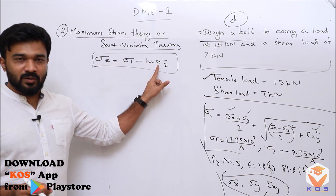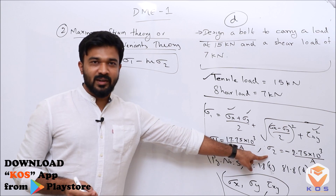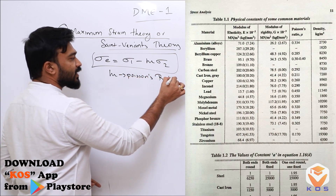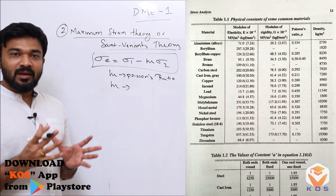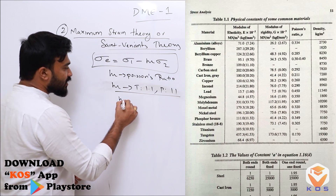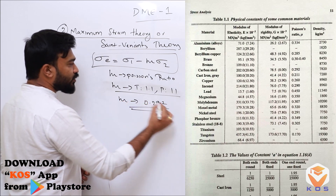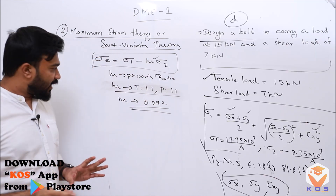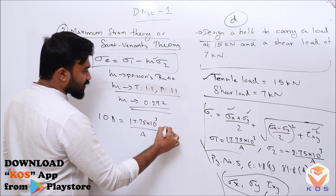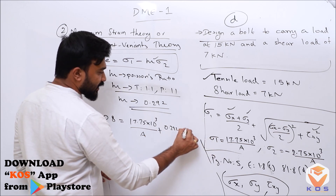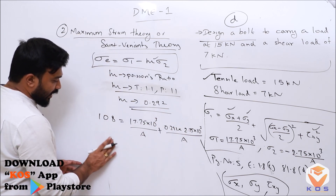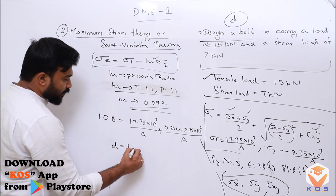The second theory is Saint-Venant Theory: sigma_e equals sigma_1 minus mu × sigma_2. We already have sigma_1 and sigma_2. Poisson's ratio mu is the lateral strain divided by longitudinal strain, from table 1.1, page 11. We get mu = 0.292. Substituting: 108 = 17.75 × 10³/A minus 0.292 × (−2.75 × 10³/A). The diameter works out to d = 14.78 mm.